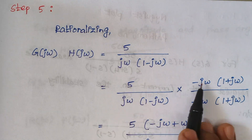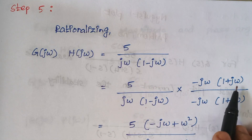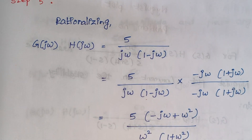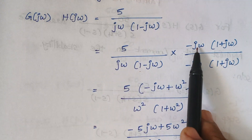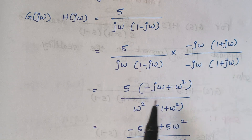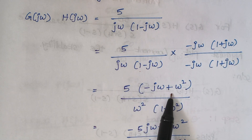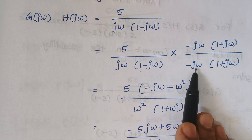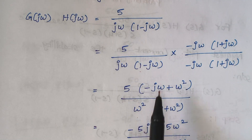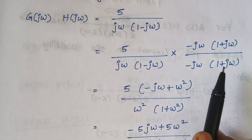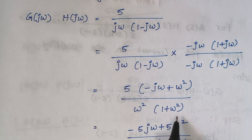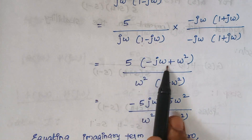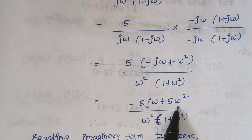We multiply by the conjugates: minus j omega for the first denominator term and 1 plus j omega for the second term, multiplying and dividing by the same terms. After multiplication, j omega times minus j omega gives omega squared, and 1 minus j omega times 1 plus j omega gives 1 plus omega squared. The constant 5 gets multiplied through, giving a combined expression.